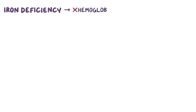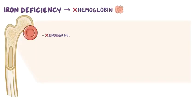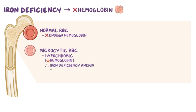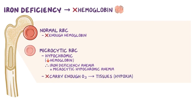Now, regardless of the cause, iron deficiency leads to impaired hemoglobin production. Since there's not enough hemoglobin for a normal size red blood cell, the bone marrow starts pumping out microcytic, or smaller, red blood cells. These cells that contain less hemoglobin are called hypochromic, since they appear pale. So iron deficiency anemia is also called microcytic hypochromic anemia. These microcytic red blood cells can't carry enough oxygen to the tissues, and this is called hypoxia.